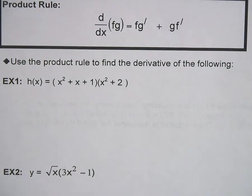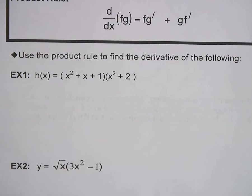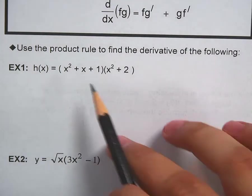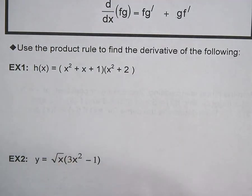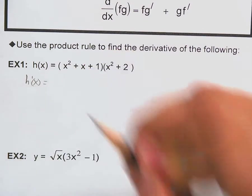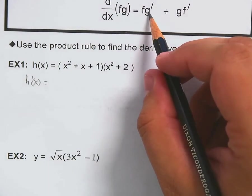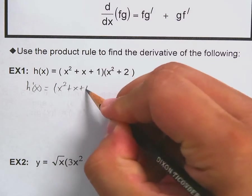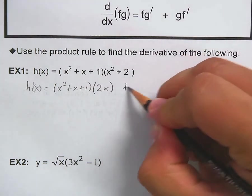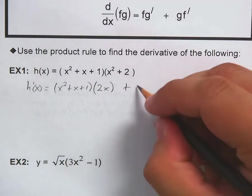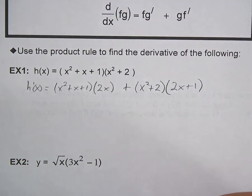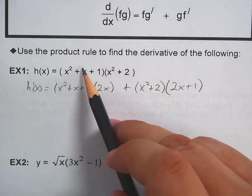Example one is a perfect example of being way too complicated to multiply out — you'd end up with six different terms. Instead, using the product rule: h′(x) equals the first, (x² + x + 1), times the derivative of the second, which is 2x, plus the second, (x² + 2), times the derivative of the first, which is 2x + 1.